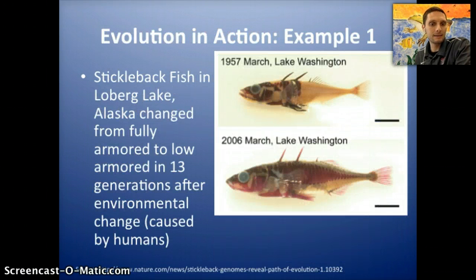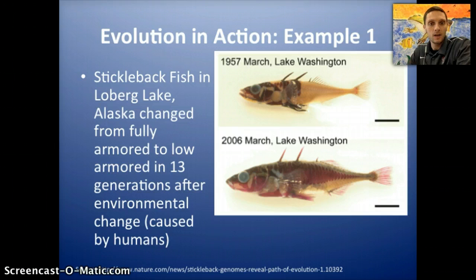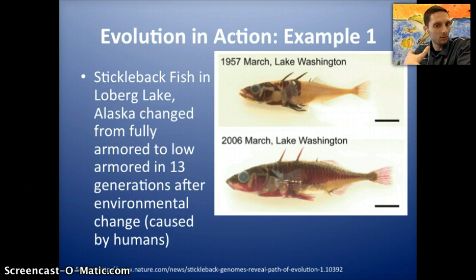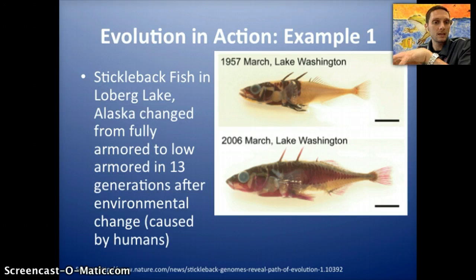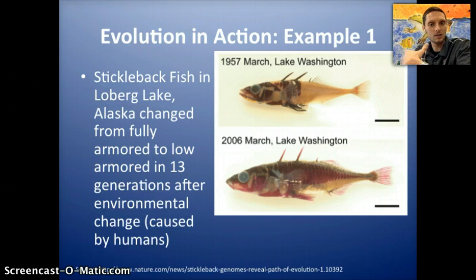Let's look at a couple of examples of biological evolution. The first is the stickleback fish in Loberg Lake in Alaska. What happened with this fish species between 1957 and 2006 is that the species changed from having full body armor to being low-armored in just 13 different generations. This was caused by an environmental change — what was present in this lake were other fish species, and some of these fish species would eat the stickleback fish. So the stickleback fish had body armor to help protect itself.